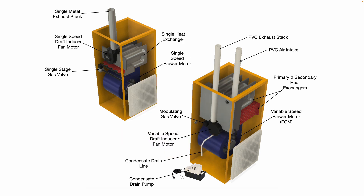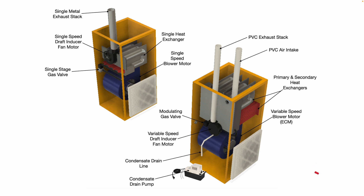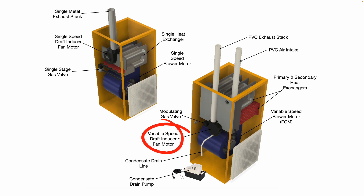As I mentioned, you can see we have a primary and a secondary heat exchanger — that's one of the big noticeable differences. We also have a variable speed blower motor like an ECM motor, a modulating gas valve, a variable speed draft inducer fan motor, and the addition of a condensate drain line.